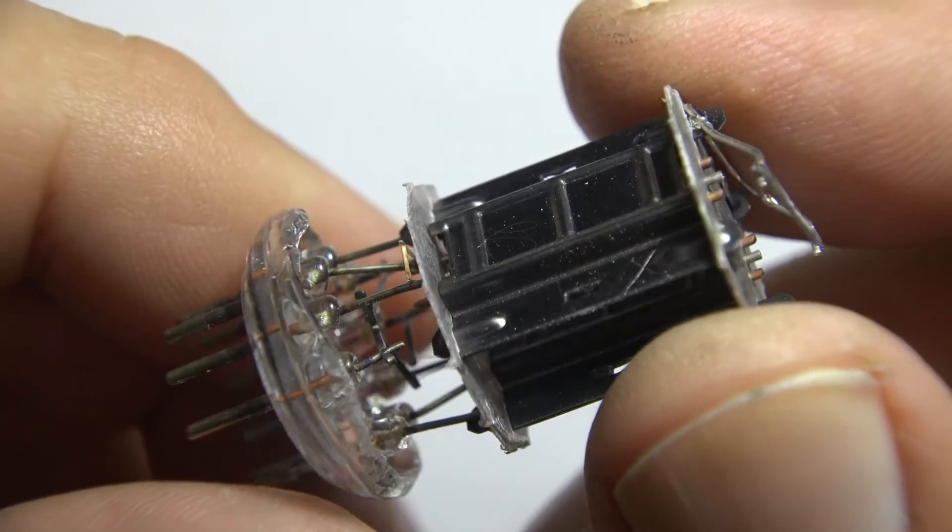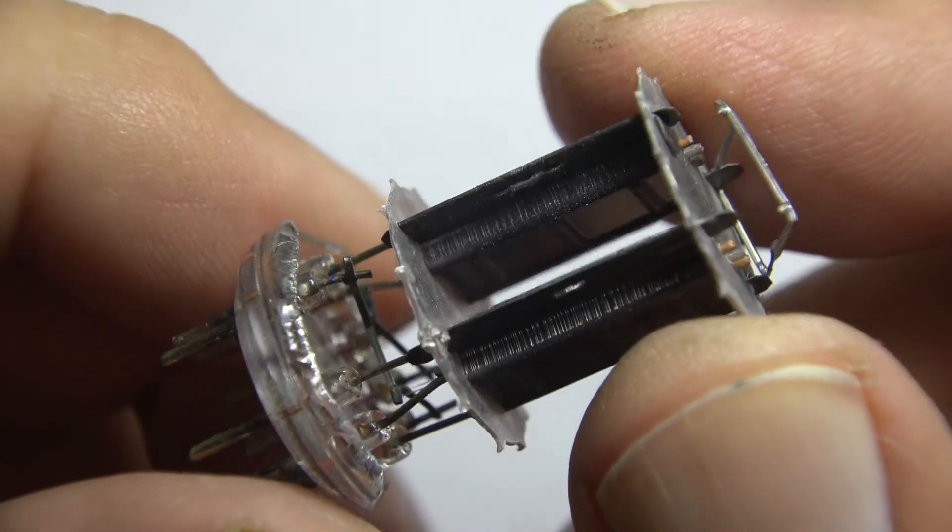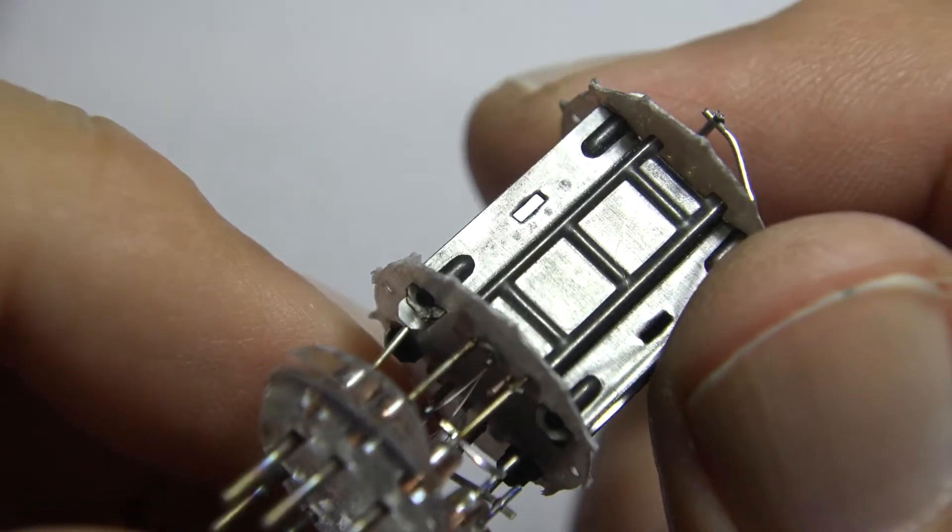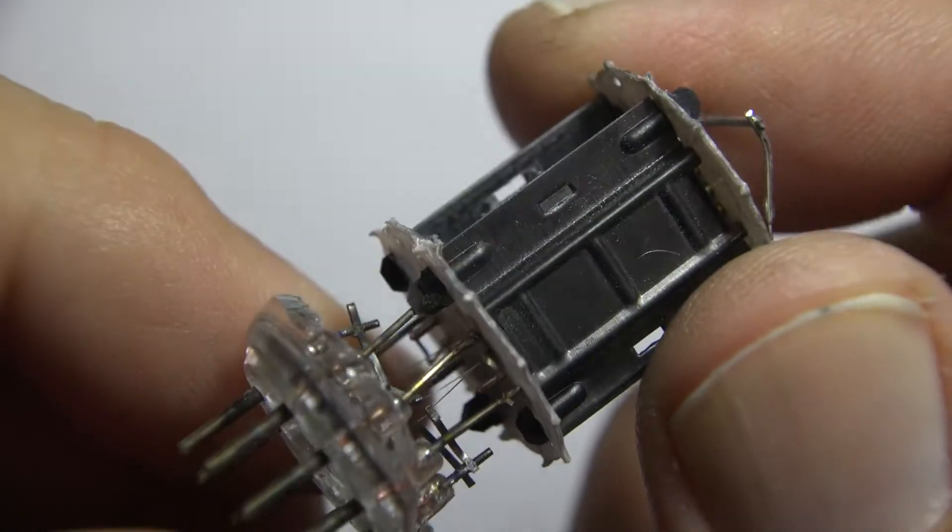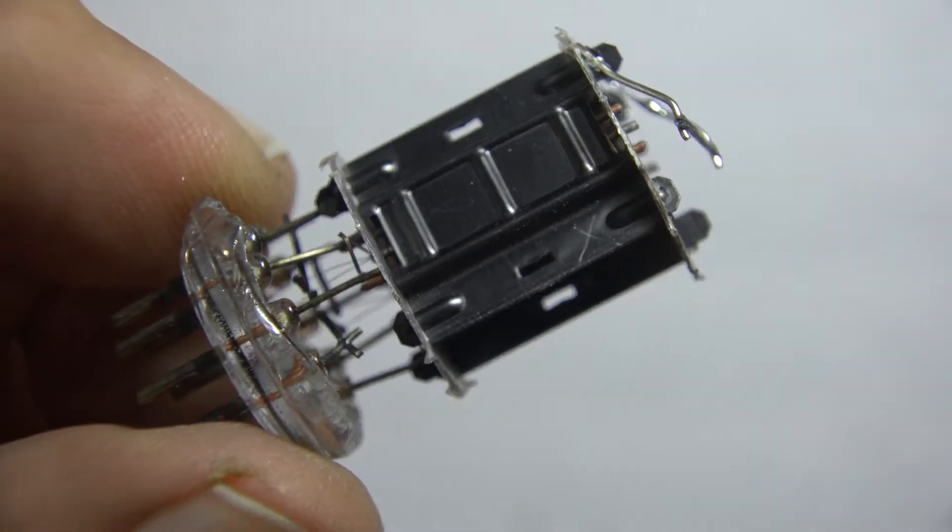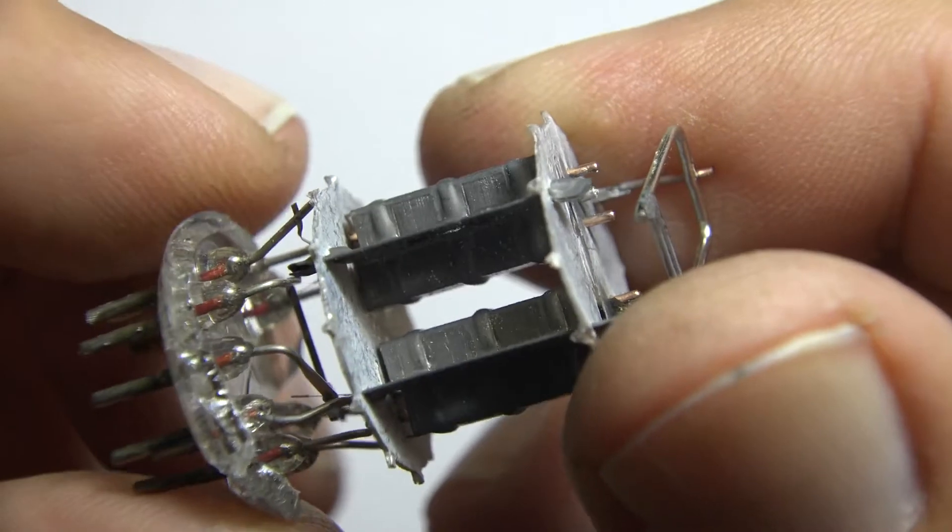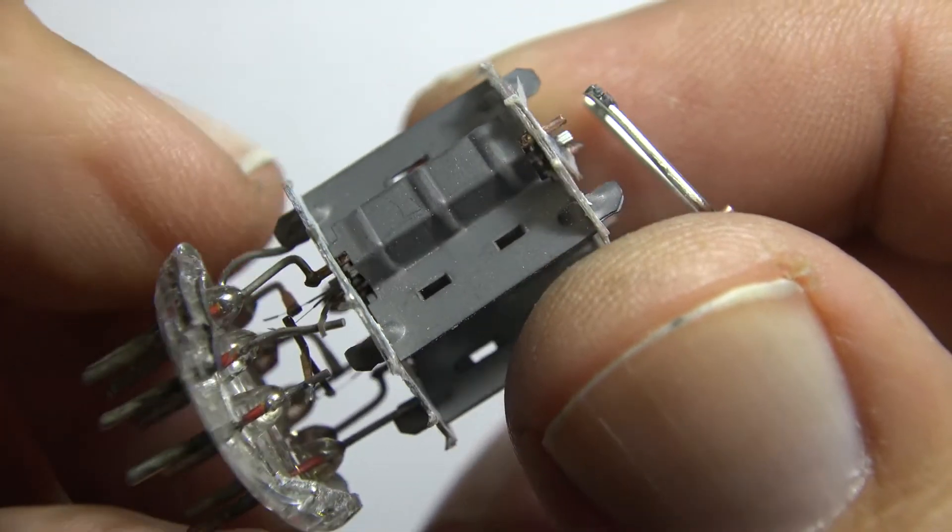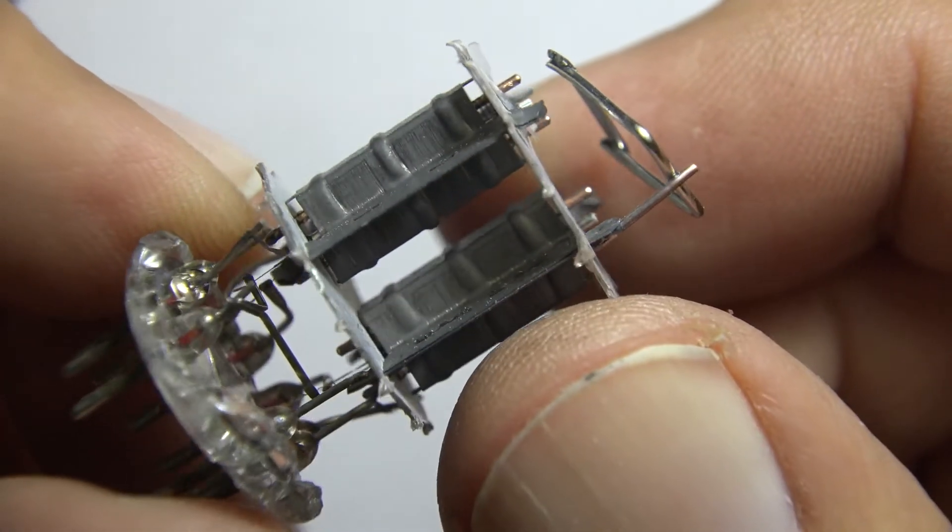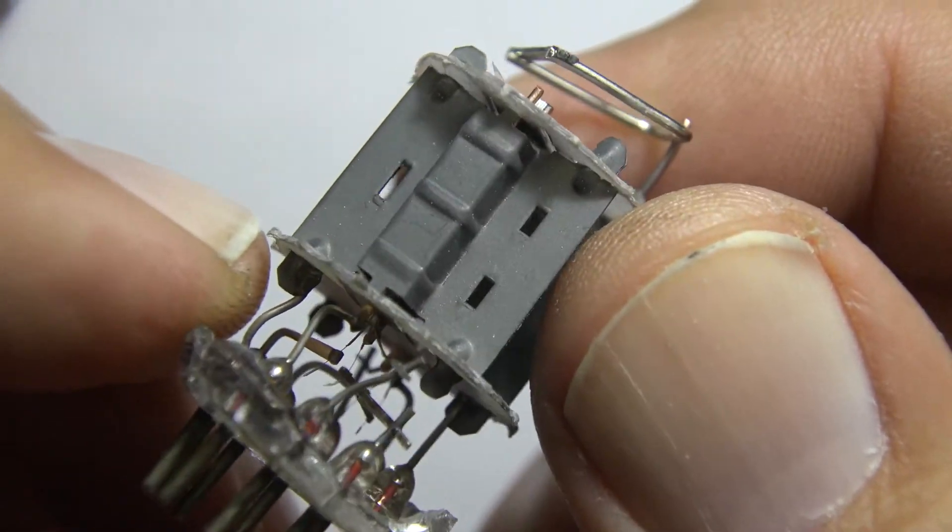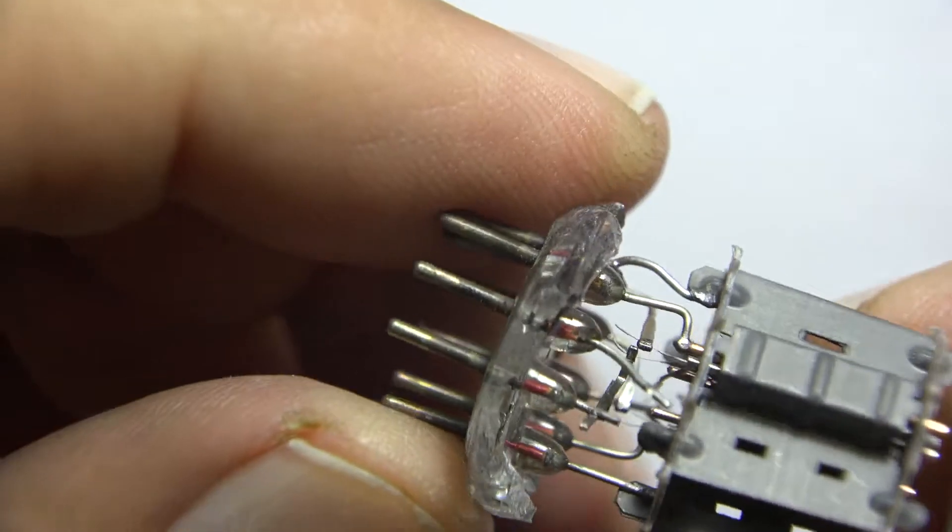Here's the 12AX7. You see the getter up on top, it's a big plate right there. Down inside of there you can see the filament wires. Take a look at the 12AU7 which has a little less gain than the 12AX7. Its grid is oriented differently in the plate. See if I can zoom in.